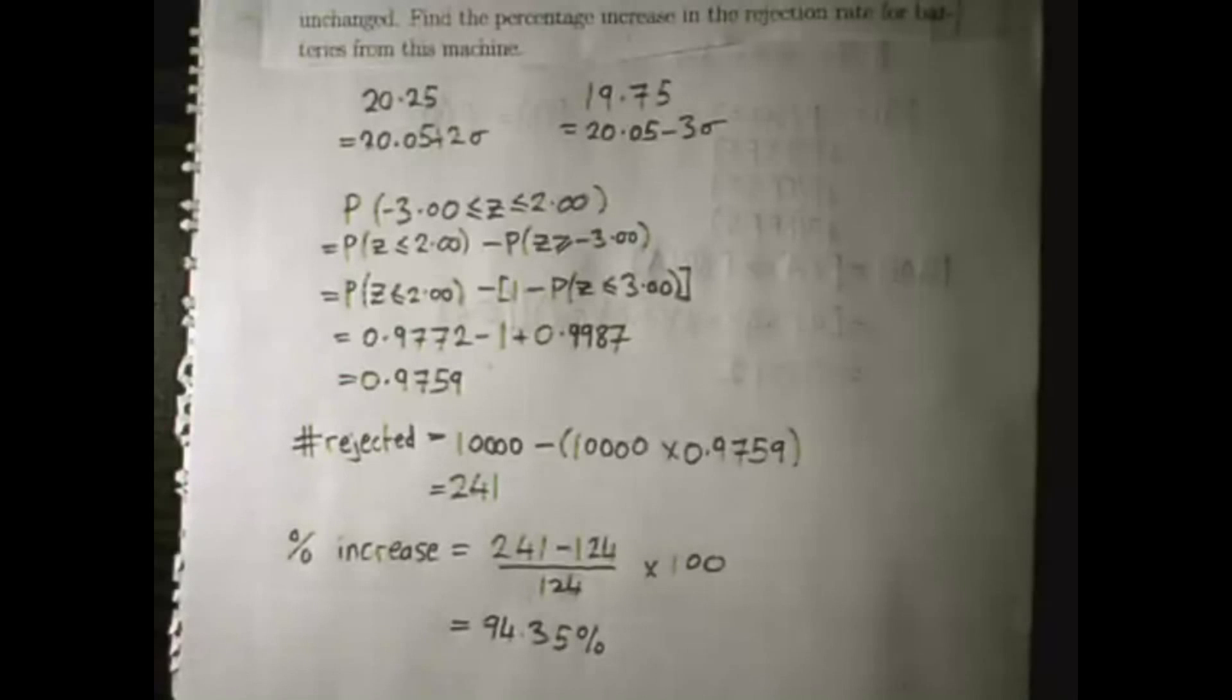To get the percentage increase, we take this number 241 that we just got, take away 124 which is how many were rejected in the first part of the question, divide that by 124, multiply by 100, and you get this 94.35% increase in the rejection rate.